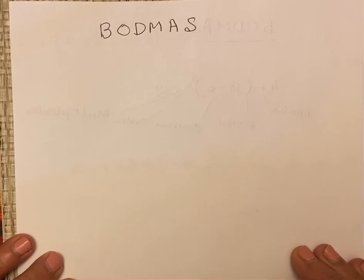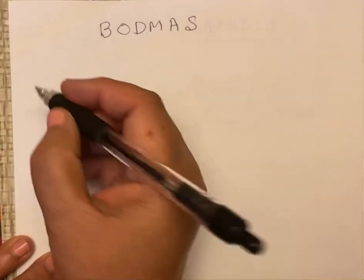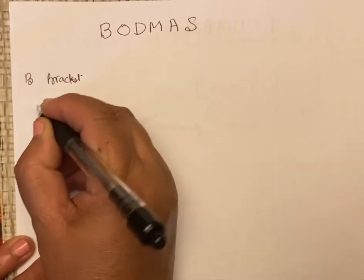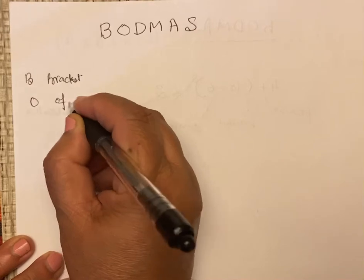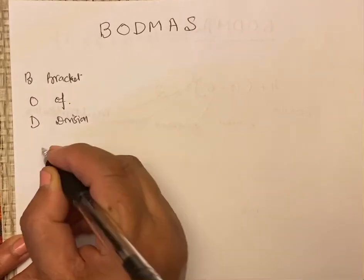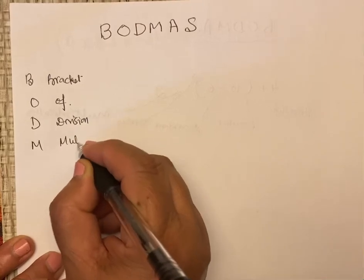BODMAS is actually short form of: B for bracket, O for of, D is division and M is multiplication.